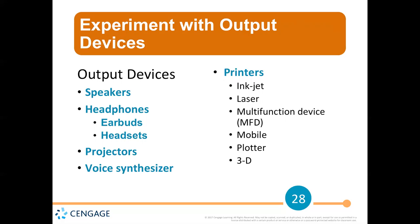Projectors give you visual output — you can project a movie or slideshow. A voice synthesizer lets the computer talk to you, which can help people who are blind. We also talked last time about people with disabilities. Printers include inkjet printers you might have at home, multifunction devices that can scan or copy as well as print, mobile printers, and plotters that can print very large items like banners or maps. And then there's 3D printers, which create something with three dimensions, not just flat on paper.